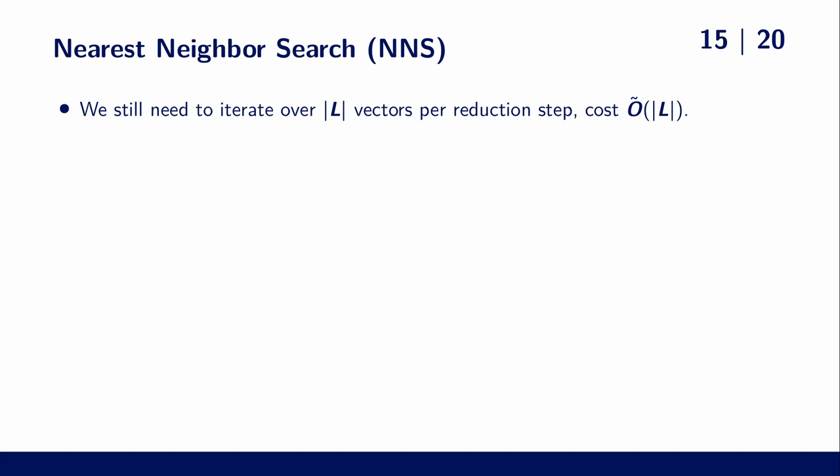So now we have improved success probability, but we still need to iterate over all our list vectors in each reduction step, leading to a cost proportional to the list size.